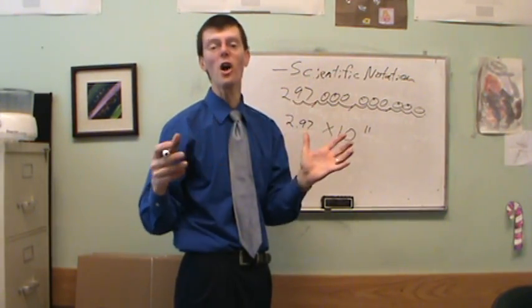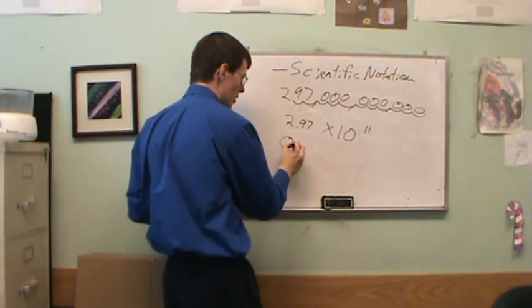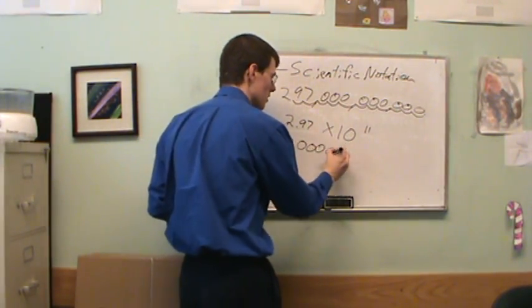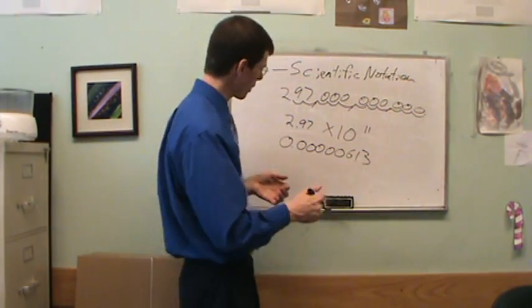Similarly, I can use this with really small, tiny, tiny numbers, like small decimals. So if I've got something like 0.0000613, again, I don't want to waste my time writing all those zeros.